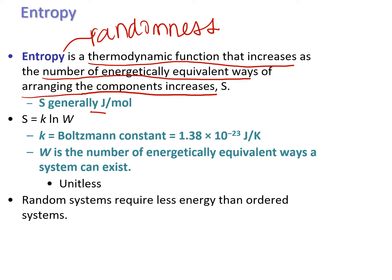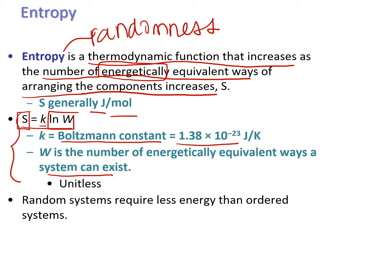Entropy is generally measured in joules per mole, so remember it has to do with energy. The mathematical definition of entropy is: S equals the Boltzmann constant — which has units of joules per Kelvin — times the natural log of W. W is the number of equivalent ways a system can exist at the same energy level, and it has no unit.